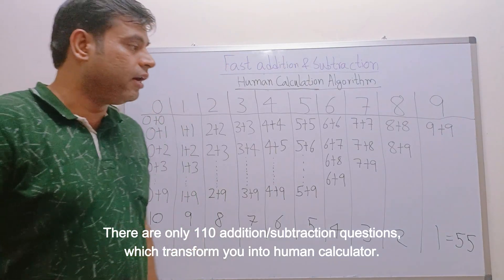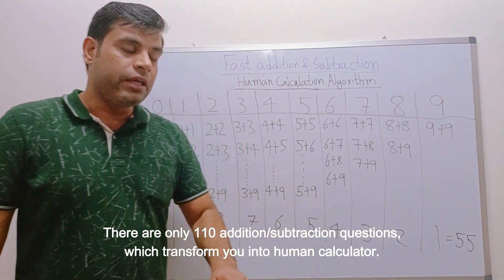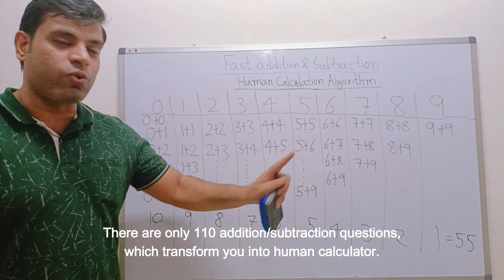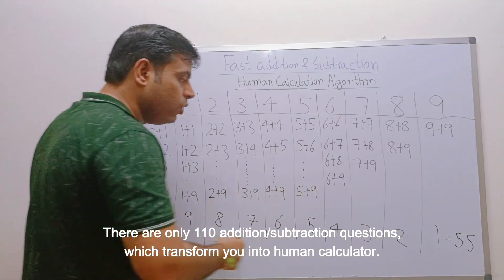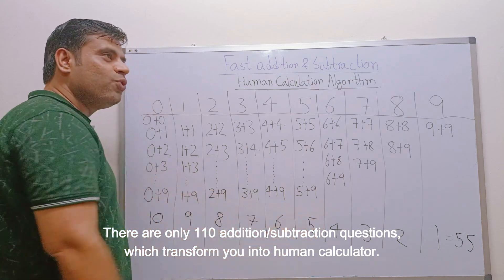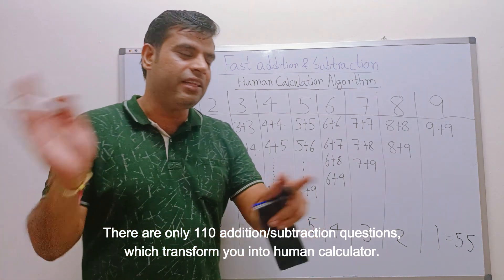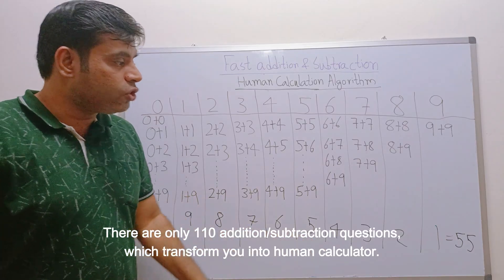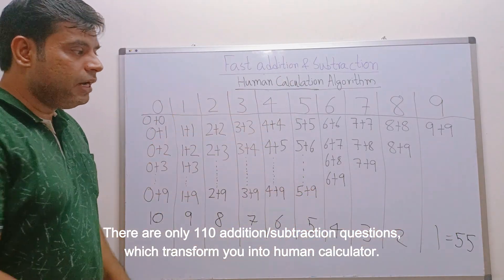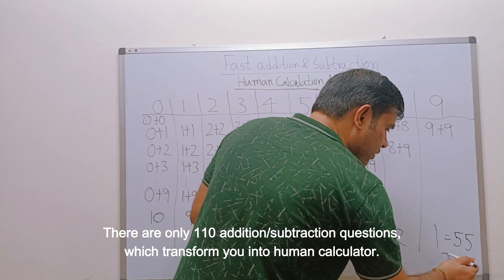And there is a formula even to directly come to the 55. Of course we will learn that in future. In fact I have covered in one of the fastest square technique also. So here we saw there are only 55 questions for additions, similarly 55 more questions for subtraction.